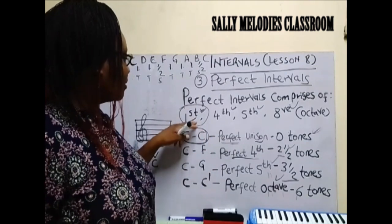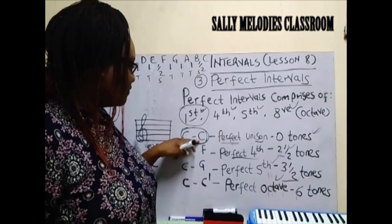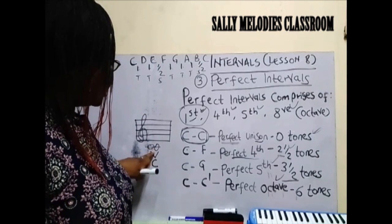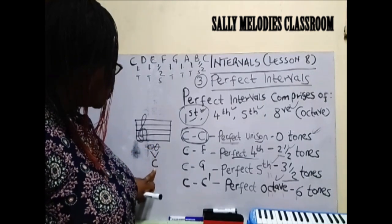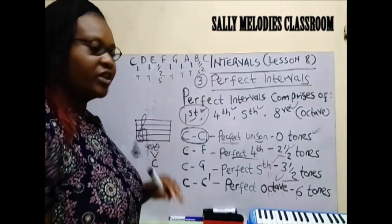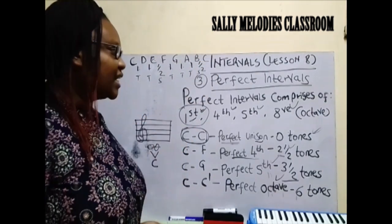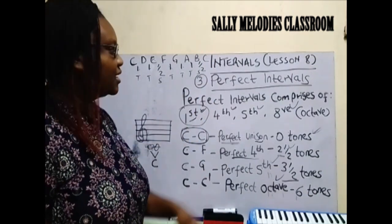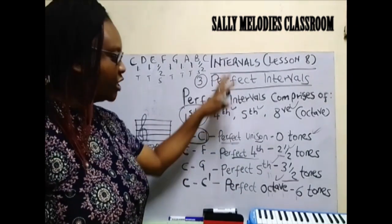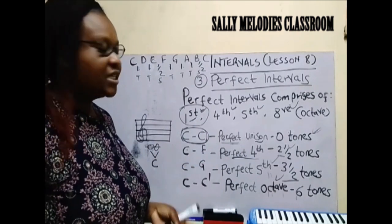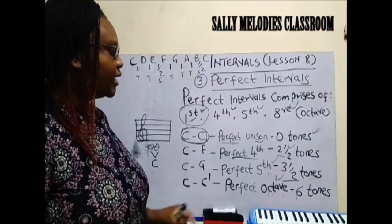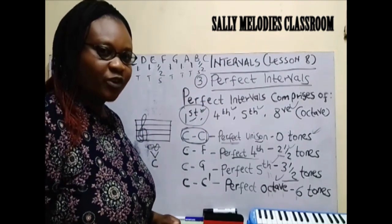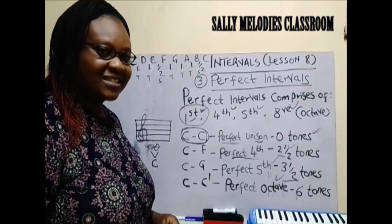Do not get confused about the first — it is the perfect unison with zero tones because we are not moving. Everybody is singing in unison and we are not moving anywhere. It is all about calculations and mathematics. If you do your mathematics properly and calculate correctly, there is nothing so difficult here. Thank you very much for attending this class. See you in the next class.